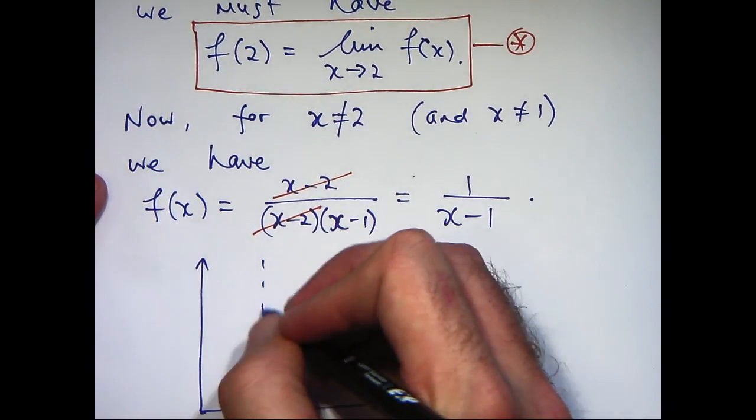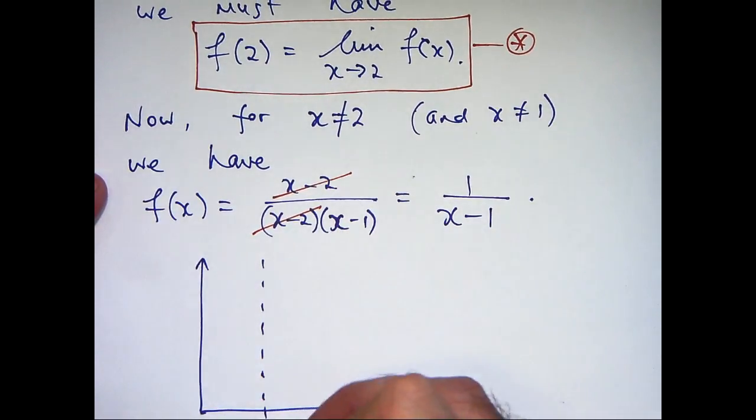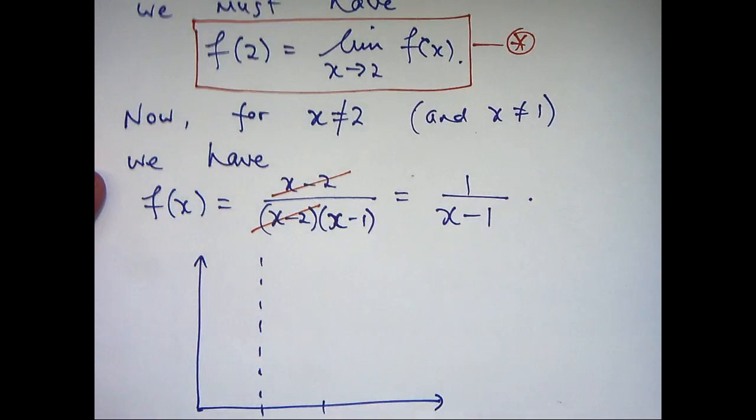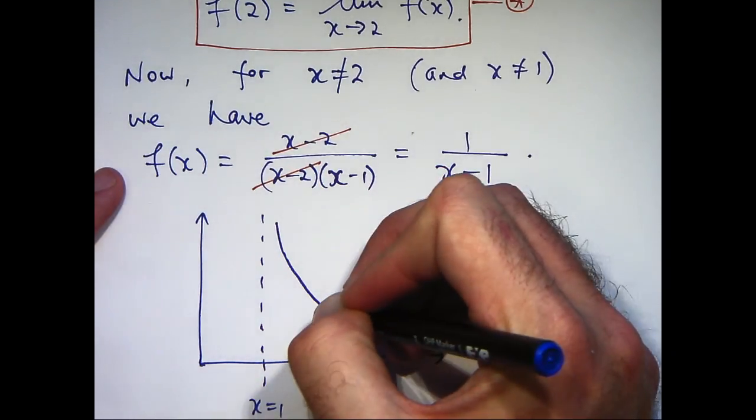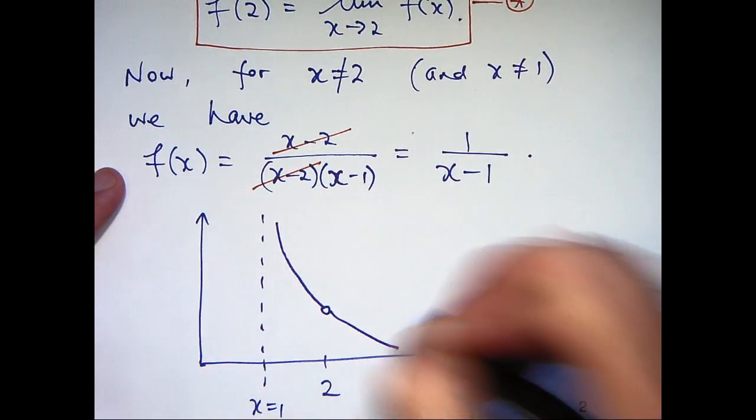So this is going to have a vertical asymptote at x equals 1. And the graph is going to look something like this.